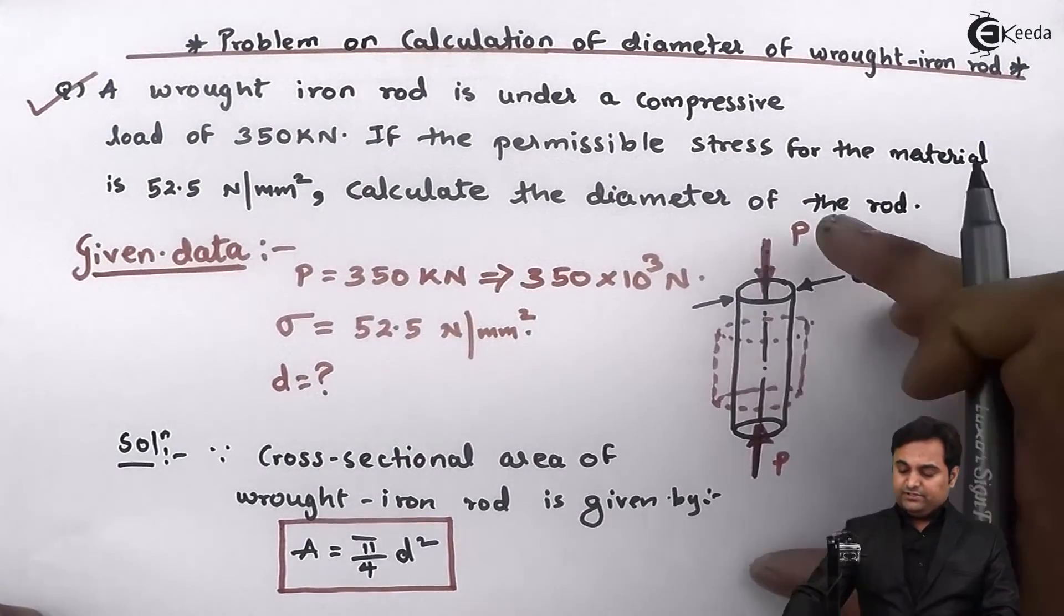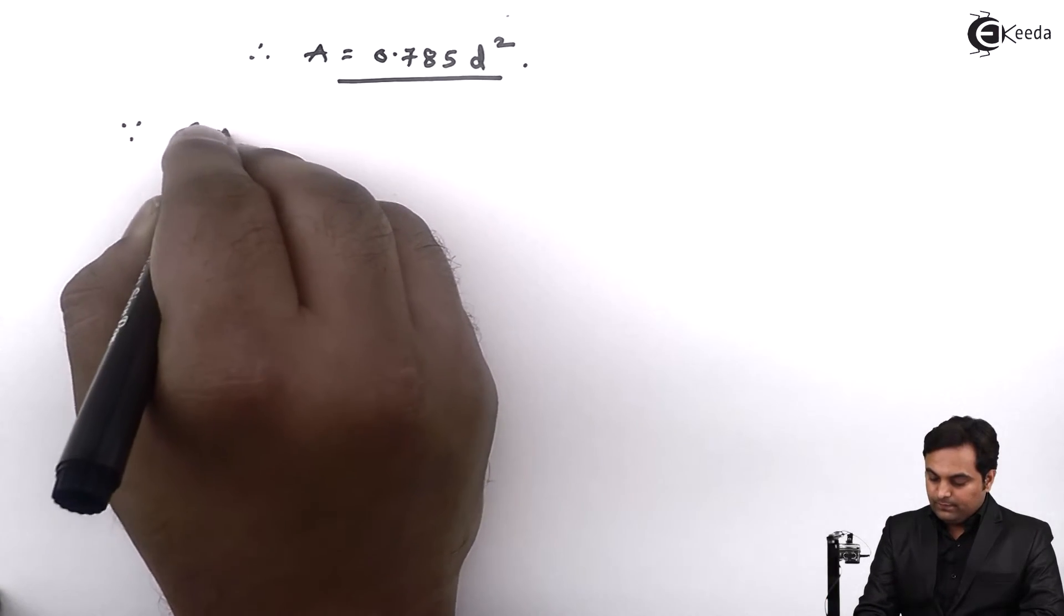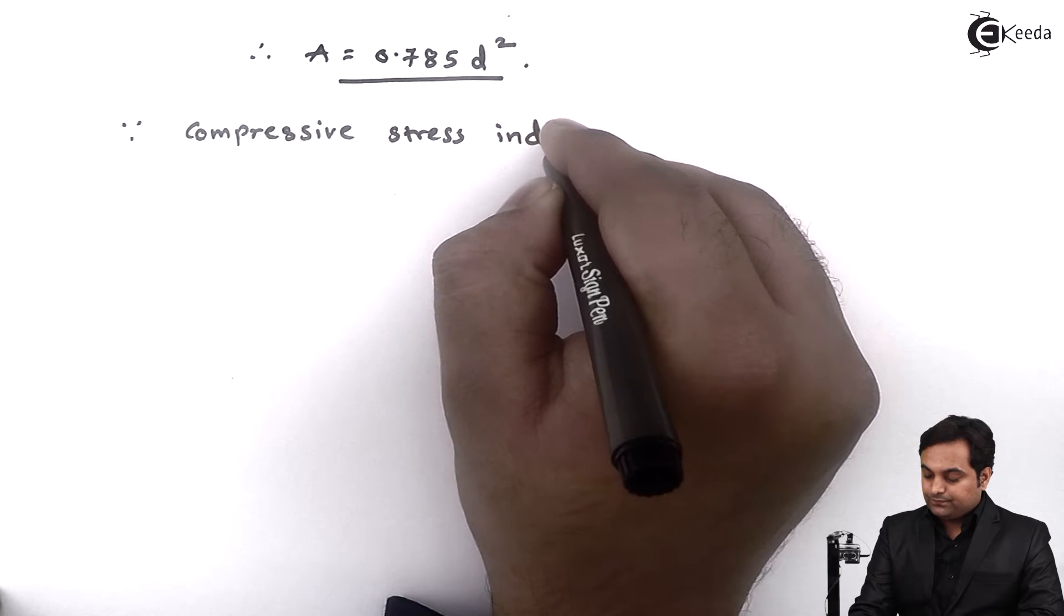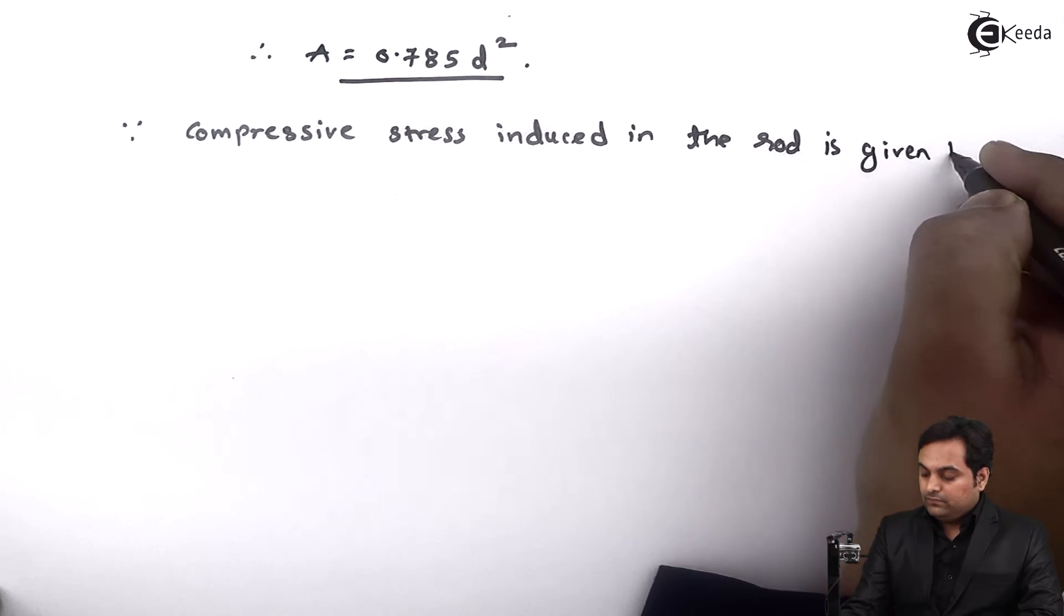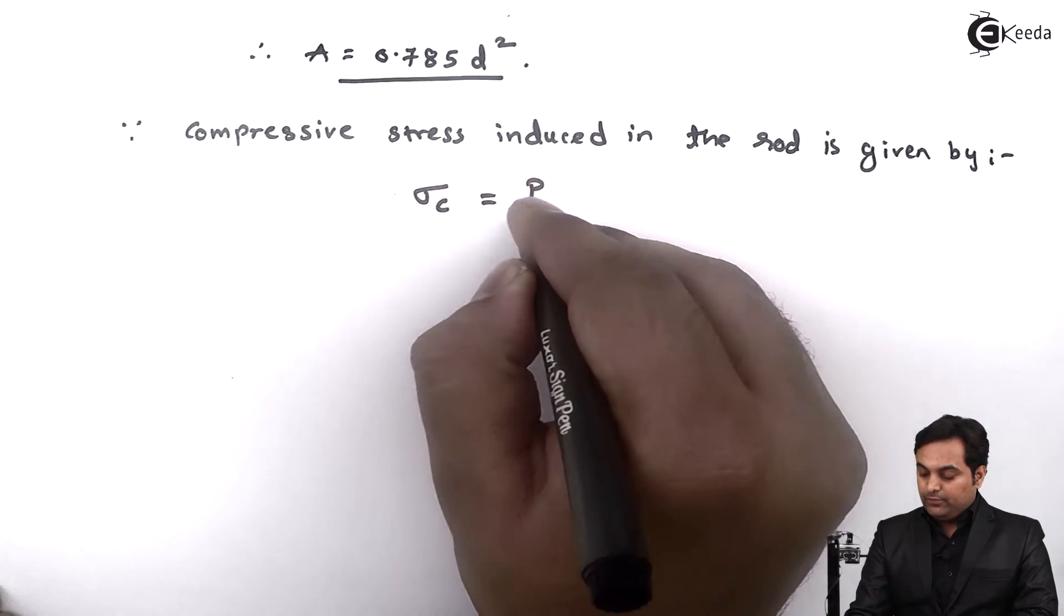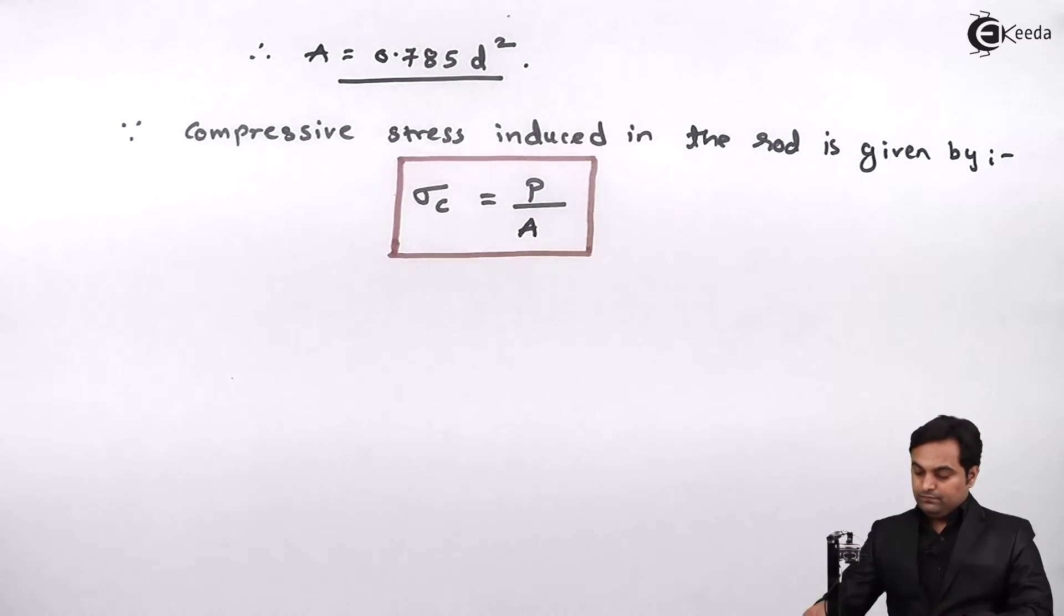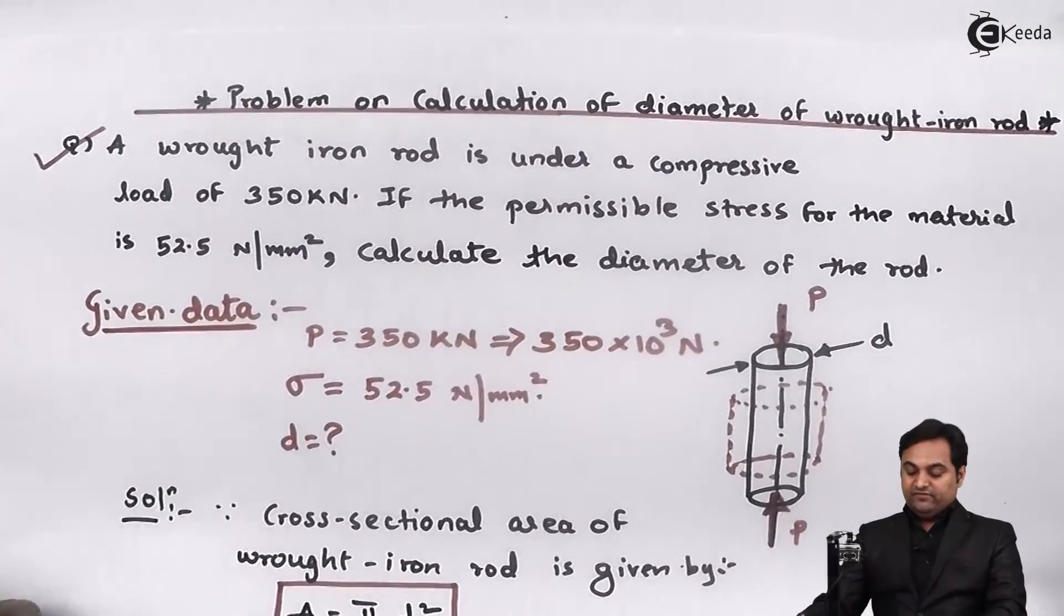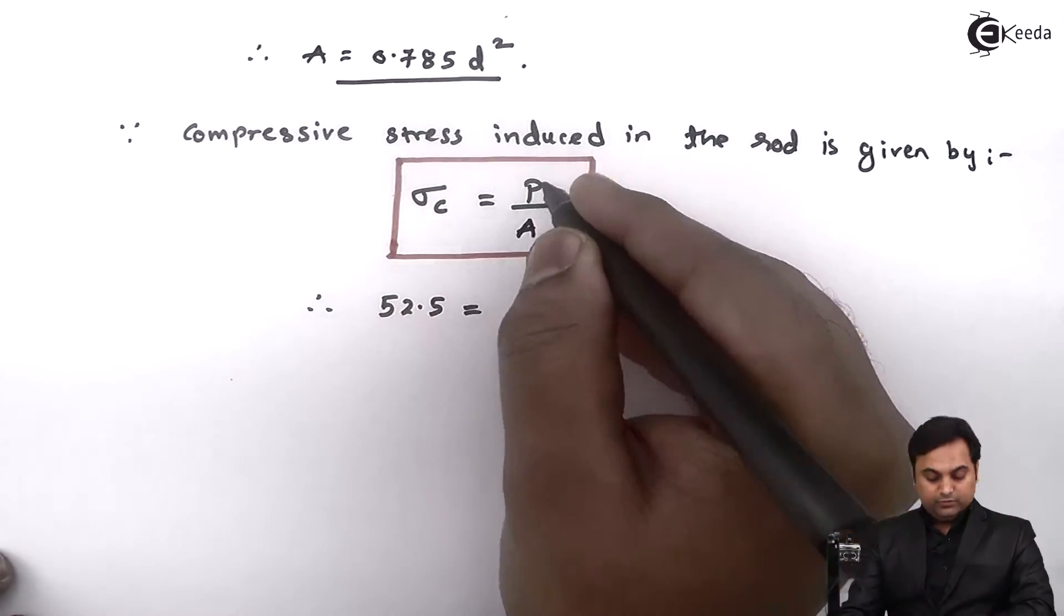area, here since it is subjected to compressive stress, I'll use the formula of stress. Compressive stress induced in the rod is given by sigma c equals P over A. So therefore sigma c value is given as 52.5, this is the compressive stress, is equal to load p is given as 350 into 10 raise to 3 newton